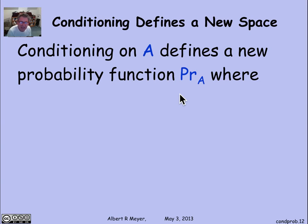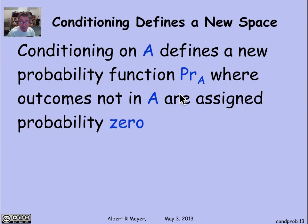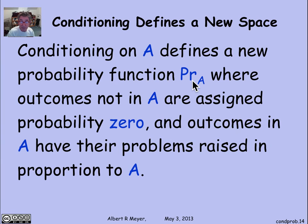So a way to formalize that is you can think of conditioning on an event A as defining a new probability function on the sample space. Once you're given that A occurred, I can now think that all the probabilities of the sample of the outcomes have changed. So in this, I'll define a new probability measure relative to A, where all the outcomes that are not in A are going to be assigned probability 0, because they can't happen given that A occurred. And all of the probabilities of outcomes of points in A, they get their probability raised in proportion to A, because now A is going to be the whole probability space.